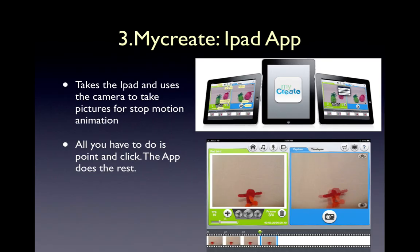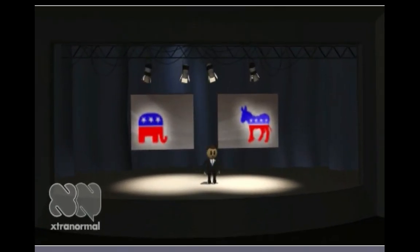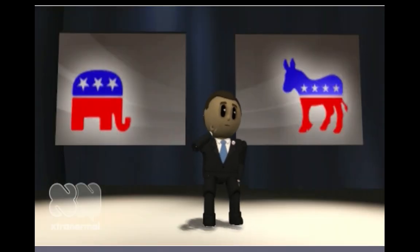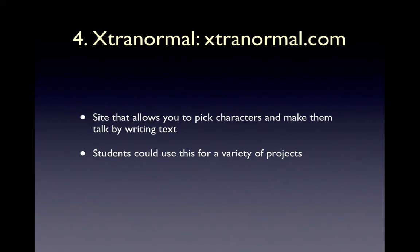Number three is MyCreate. MyCreate is an iPad app — it uses the camera to take pictures for stop motion animation. If you've ever wanted to do stop motion animation, this makes it so easy. All you have to do is point, click, and take the pictures — the app does everything else. Number four is ExtraNormal. ExtraNormal is a site where you can create animations by picking characters and making them talk by simply writing text. Students can use this for a whole bunch of different projects — if it's a video project and they don't want to film themselves, this is a way to go. I've had kids do great video projects with ExtraNormal.